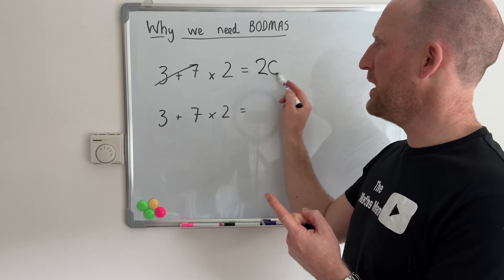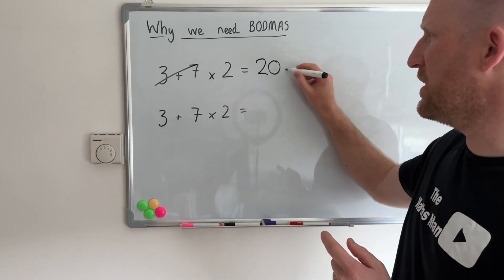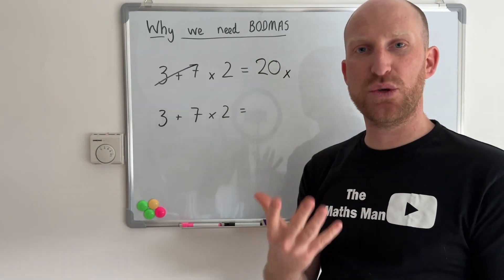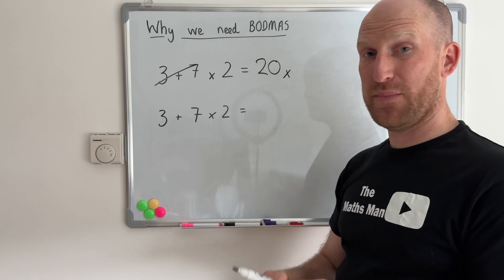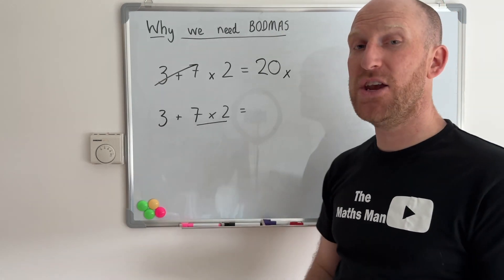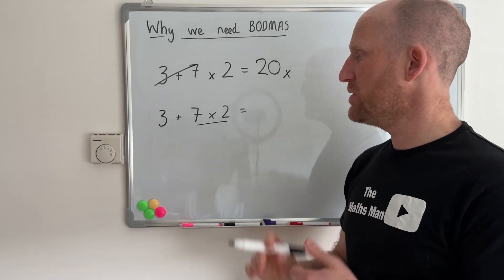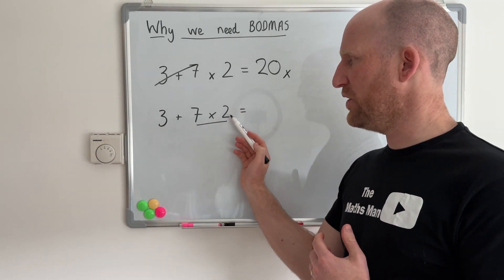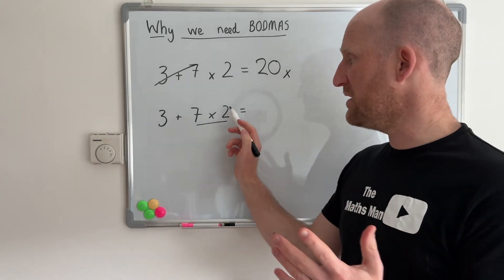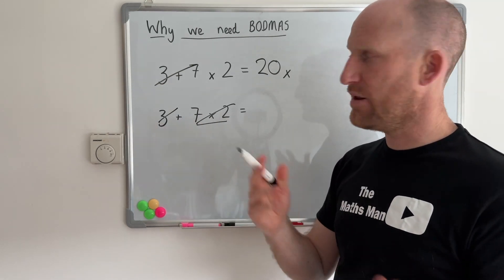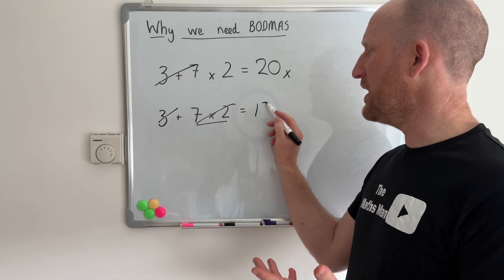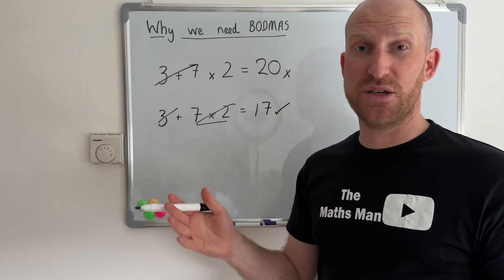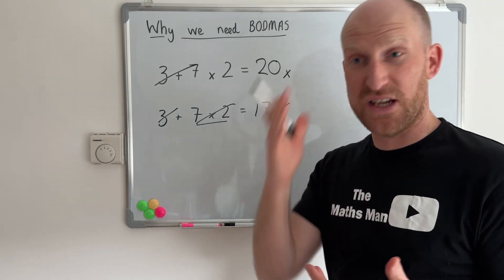But that actually is the wrong answer because what BODMAS tells us to do is to do the multiplication part of this question first. So because I know BODMAS what I'm going to do is I'm going to do 7 times 2 first which is 14 and then I'm going to add 3 and that gives me an answer of 17 and that is actually the right answer because I know what BODMAS is and I know the rules.